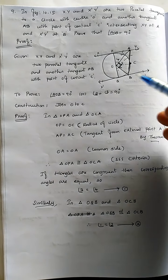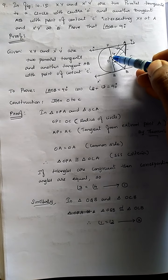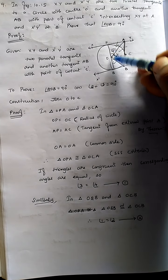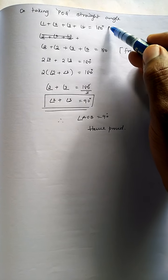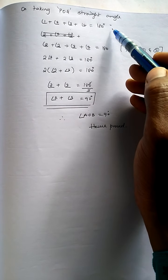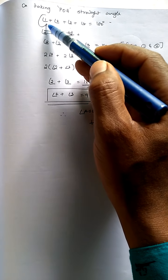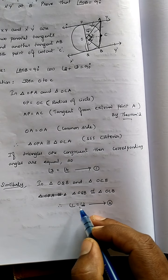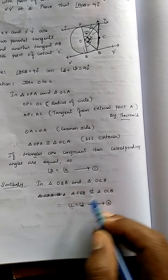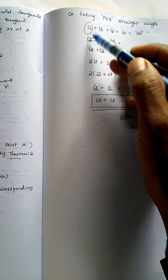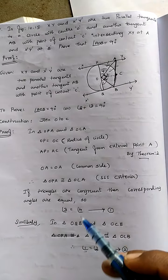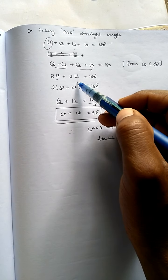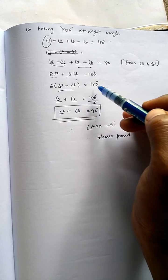To prove this, take POQ as a straight angle. This straight angle is divided into four angles, so straight angle equals 180 degrees. We have four angles: 1, 2, 3, 4 equal to 180 degrees. From equations 1 and 2, angle 1 equals 2 and angle 4 equals 3, so we can substitute. In place of angle 1 we take angle 2, and in place of angle 4 we take angle 3. We get 2 times angle 2 plus 2 times angle 3 equals 180.